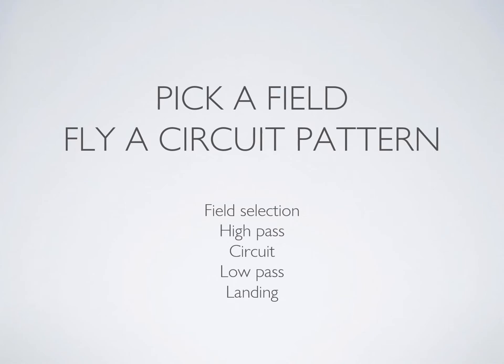The flight training manual looks at the precautionary landing as two parts: pick a field, then fly a circuit pattern approach. I'm going to break it down further into five parts: field selection, high pass, set up your circuit, do a low pass, and then come back around for a landing. Hopefully that keeps it more organized so you have a better idea of what the entire process looks like.